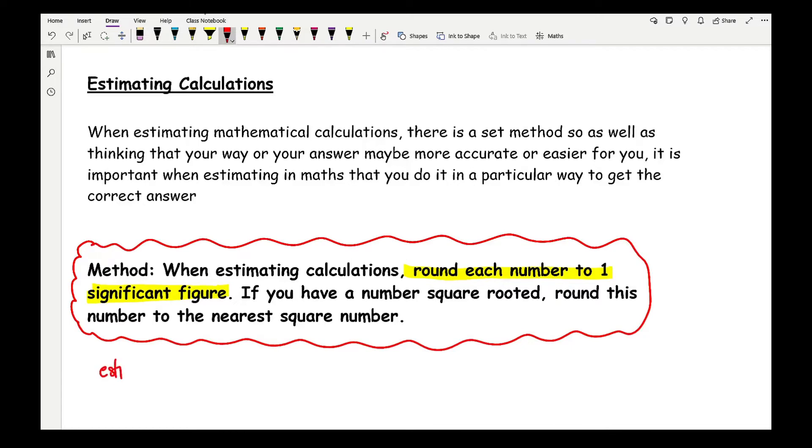So let's say I wanted to estimate the square root of 38.143. Now when we're estimating, we tend to use a sort of curly or curved equal sign. What that basically means mathematically is it's approximately. So if you are estimating a particular calculation and you are rounding these numbers up to one sig fig, then rather than using the equal sign, which is going to be incorrect, use this sort of approximator, which is like a curved equal sign instead.